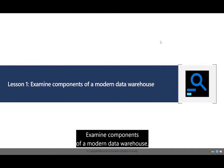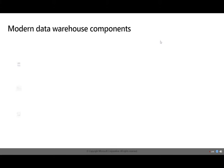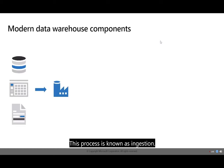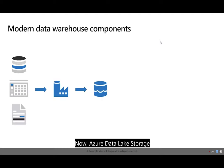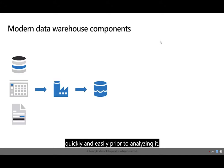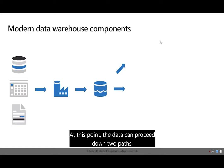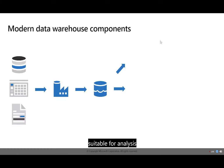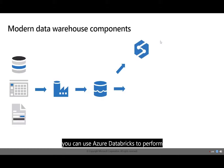Lesson 1: Examine Components of a Modern Data Warehouse. Data from relational and non-relational services is retrieved and formatted using Azure Data Factory — this process is known as ingestion. The formatted data is then written to Azure Data Lake Storage, which enables you to store large volumes of data quickly and easily prior to analyzing it. At this point, the data can proceed down two paths: it can be converted into a normalized format suitable for analysis and stored in Azure Synapse Analytics, or alternatively, you can use Azure Databricks to perform other forms of data preparation.